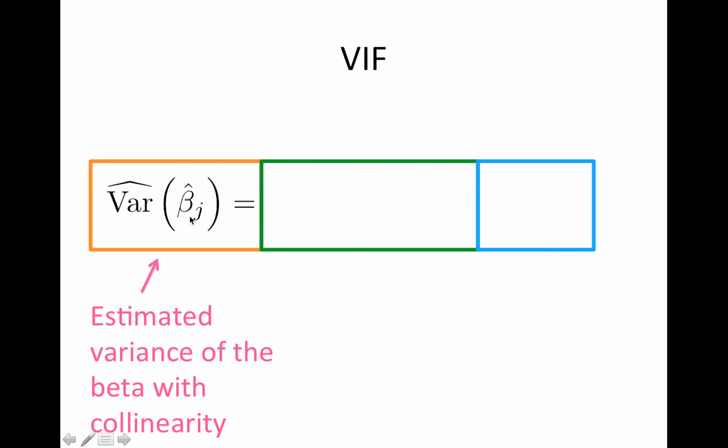So what's in the orange box? Just the variance of beta hat j, the estimated variance of the beta with collinearity. So this is what it looks like just in the model with all of its buddies, all the other regressors.